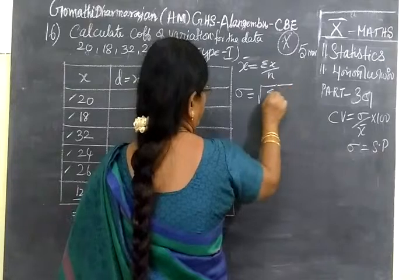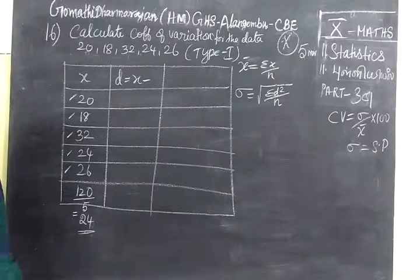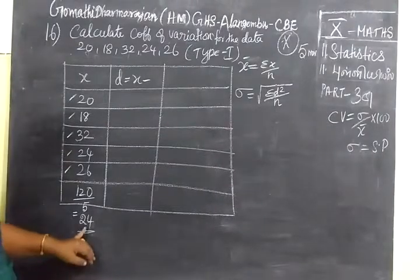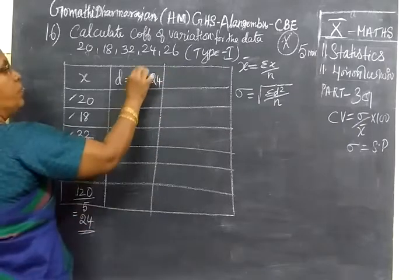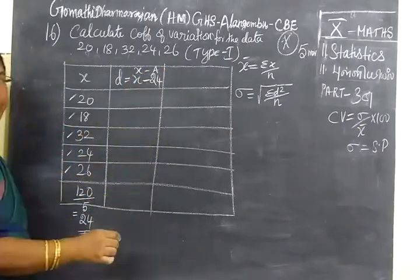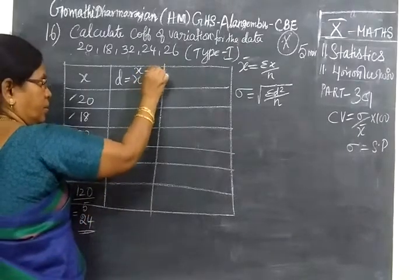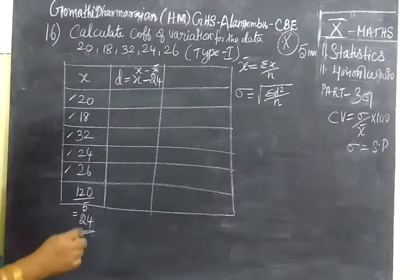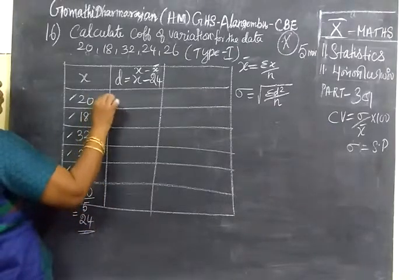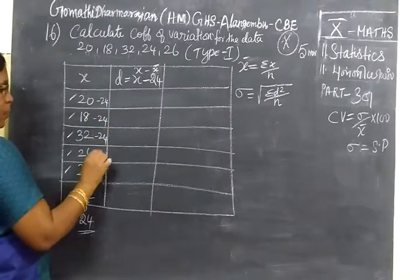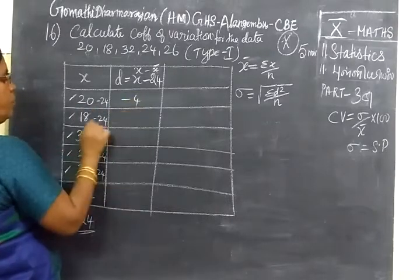Then sigma equal to root of sigma d square by n. First question we have seen in this way. We get 2. Assumed mean then we write x minus A. But here not assumed mean, x bar number of x bar. So this is x minus x bar. Now we get minus 24. We only make this 24 you subtract. If you subtract, you get minus 4.